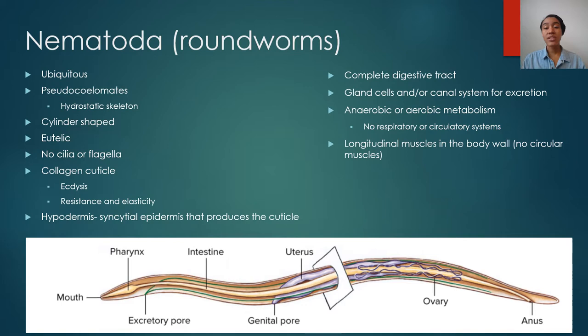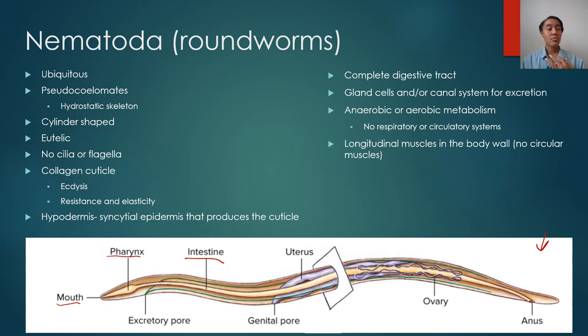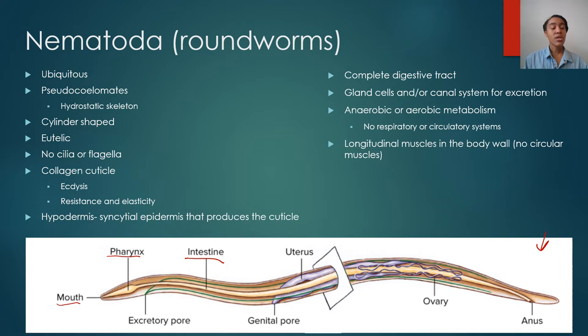Nematodes also have a complete digestive tract with a mouth, pharynx, intestine, all the way down to the anus, as you can see in this image. They have gland cells and/or a canal system for excretion — they're far more simple than what we saw in annelids. They don't have metanephridia or anything like that for excretion. They also don't have any respiratory organs; they undergo respiration via their skin. They generally are composed of very few internal organs in order to survive.